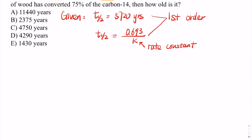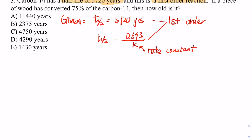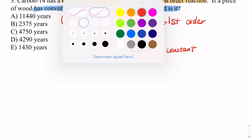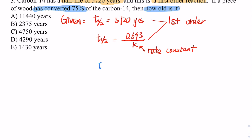We can now connect this information to the second half of the question. It says if a piece of wood has converted 75 percent of its carbon-14, then how old is it? 'Has converted 75 percent' means there will be 25 percent left. So the concentration at this moment is 100 percent minus 75 percent of the initial — that's how much remains.